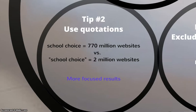The second tip is to use quotations. If you search Google just typing in the words school choice, you get about 770 million websites back. However, if you put the terms in quotes, it says only pull back where school is in front of and next to the word choice, which is actually about 2 million websites. So using quotations will give you much more focused search results and you won't have to look through so many websites.